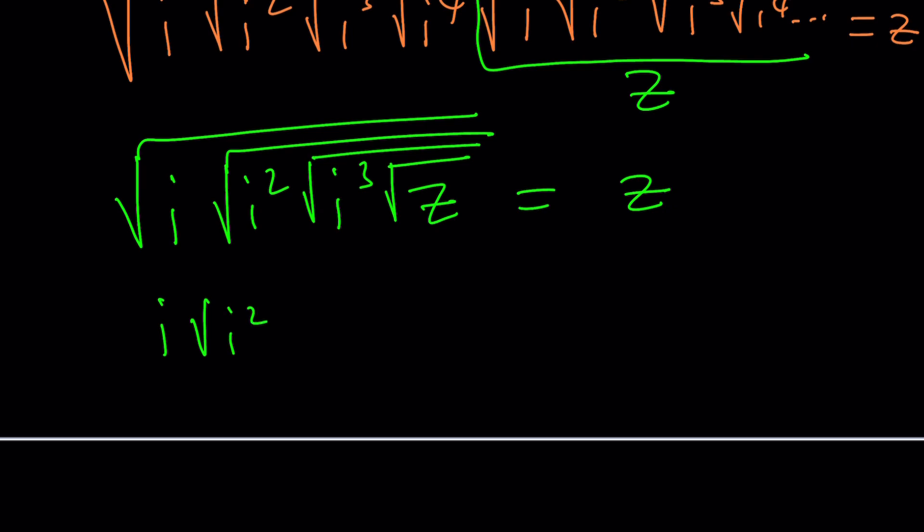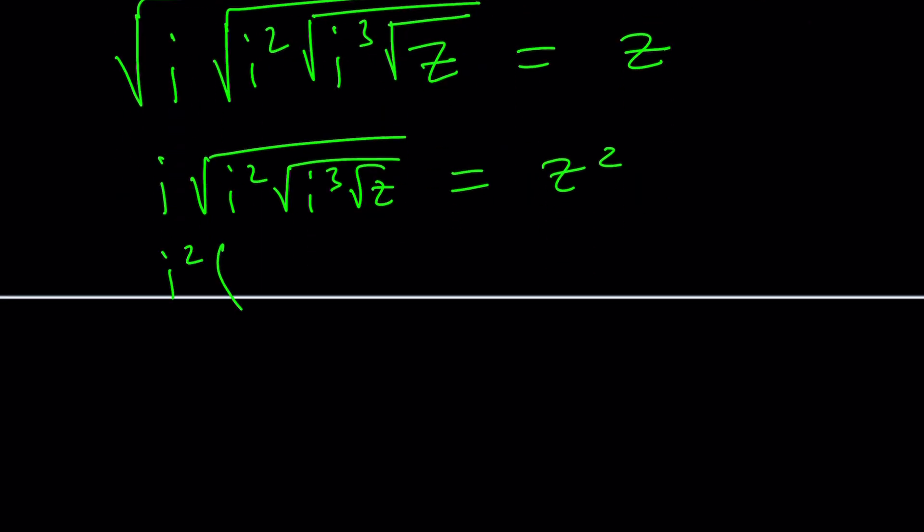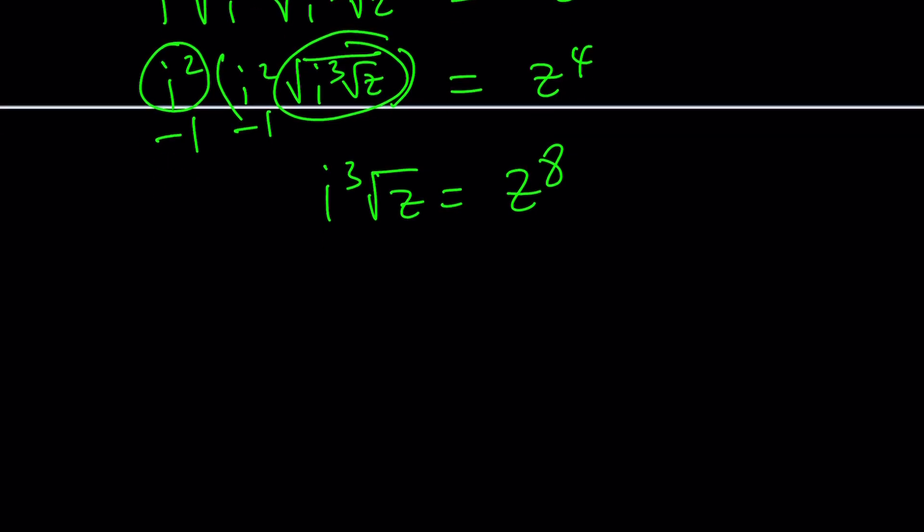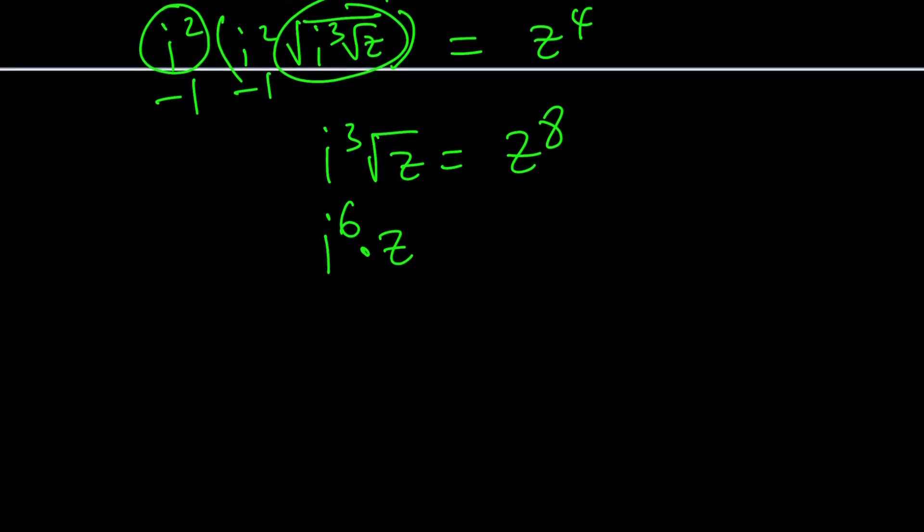Square once, you get this—that'll be z squared. Square one more time, you'll get i squared, and this layer peels off, giving us z to the fourth. Of course, that's negative one. If you write it as negative one, this is also negative one. When they multiply, they're positive one. Square again, you get i cubed multiplied by the square root of z is z to the eighth power. Square one more time: i to the sixth times z is z to the power of 16. And finally, z to the power of 15 is i to the sixth. But i to the sixth is i squared, because i to the fourth is one, and that is negative one.